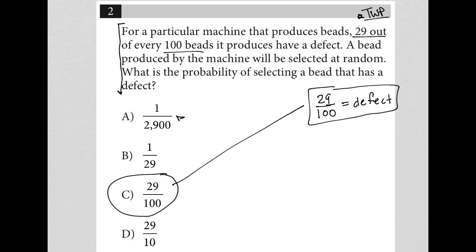1 out of 2,900, definitely not. 1 out of 29, definitely not as well. 29 out of 10, that would mean more defects than actual beads that you have. So that's obviously also not correct.